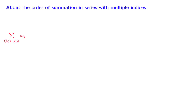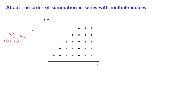Let us now consider the case where we want to add the terms of a double sequence but over a limited range of indices, as in this example where we have coefficients a_ij which we want to add only for those i's and j's for which j is less than or equal to i. Graphically, this means we only want to consider the pairs shown in this picture — the points where i equals j form the diagonal, and points to the right correspond to ij pairs for which i is at least as large as j.